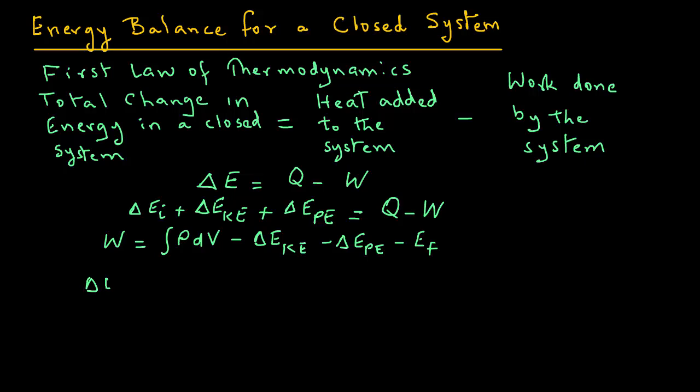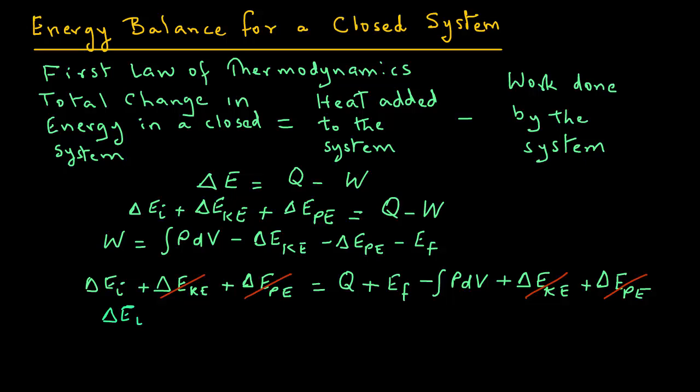Then we have delta EI plus delta EKE plus delta EPE equals Q minus W, and instead of W we will use EF minus integral PdV plus delta EKE plus delta EPE. Note that the kinetic energy term and the potential energy terms will cancel out. So we have delta EI, which is the change in internal energy, equals Q plus EF minus integral of PdV.